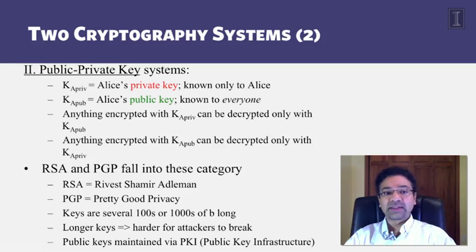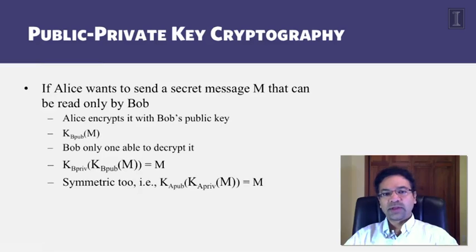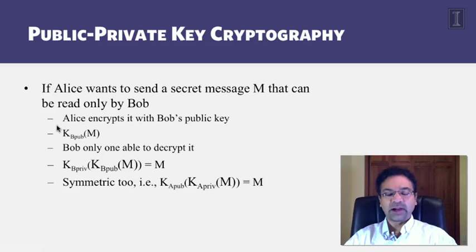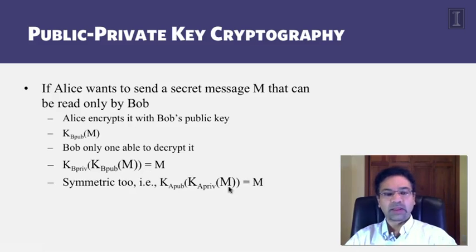A Public Key Infrastructure (PKI) is maintained which holds the public keys of all principals in the system, so anyone can access anyone else's public key. If Alice wants to send a secret message M that only Bob can read, Alice encrypts it with Bob's public key K_B_pub. The resulting encoded message can only be decrypted using Bob's private key, which only Bob possesses. Applying Bob's private key gives back the original message. Conversely, encoding with a private key and decrypting with the public key is the mechanism used for digital signatures.